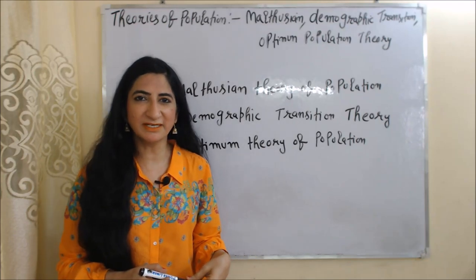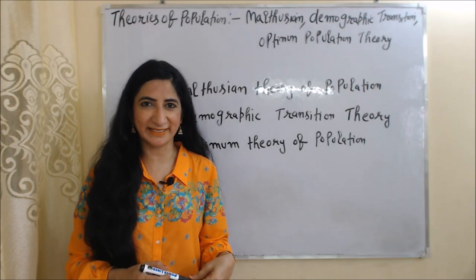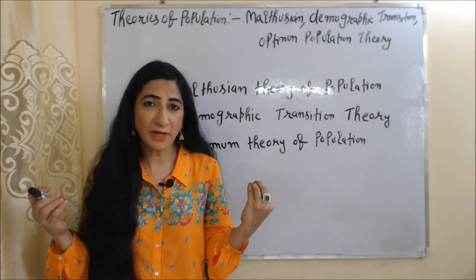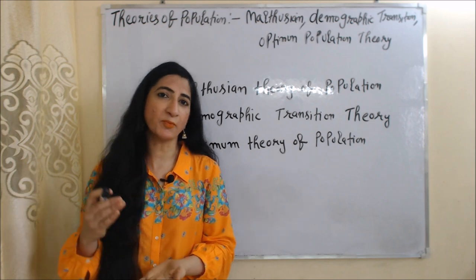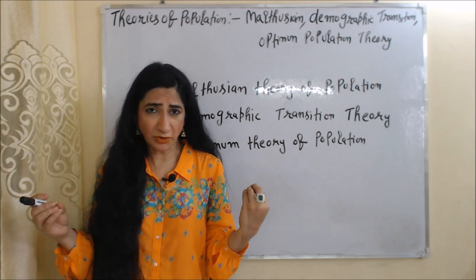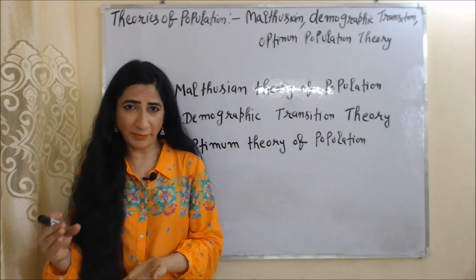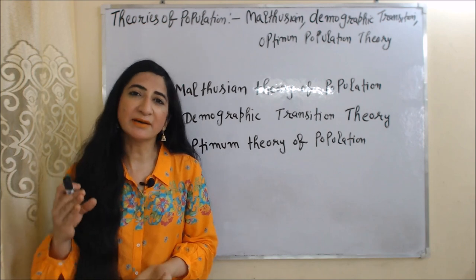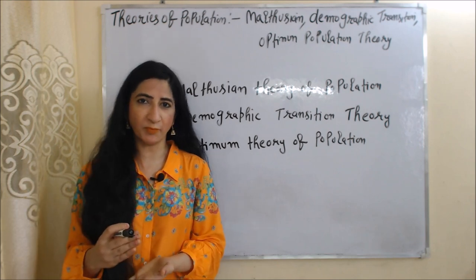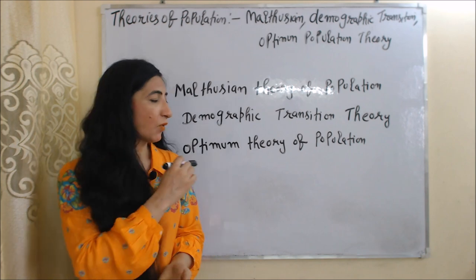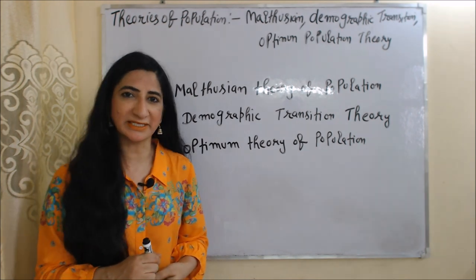Hello everyone, my name is Mini Seti. I hope you all are staying healthy. Today we are going to talk about theories of population, in which we will discuss the Malthusian theory of population, demographic transition theory, and optimum theory of population. We will discuss each theory one by one.